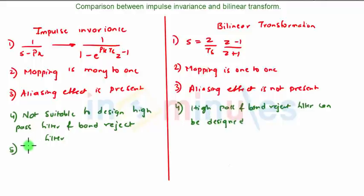The fifth point: in impulse invariance, only poles can be mapped, but in bilinear transformation, both zeros and poles can be mapped.